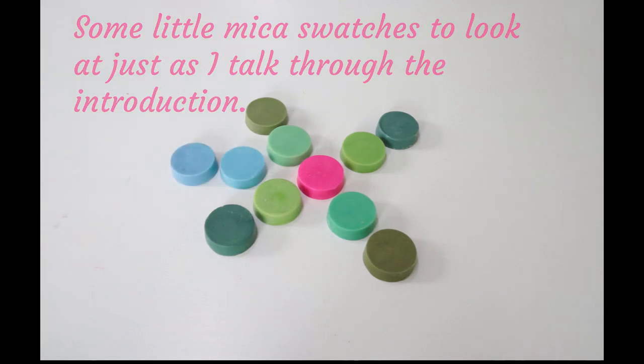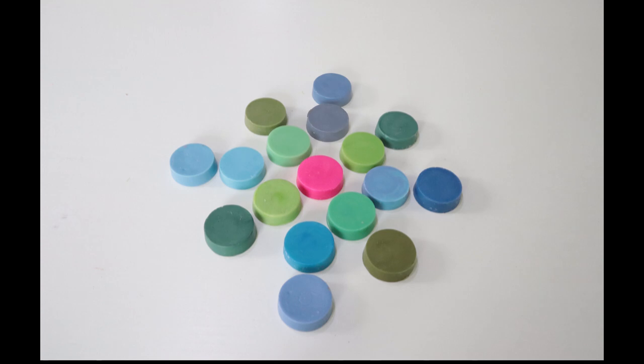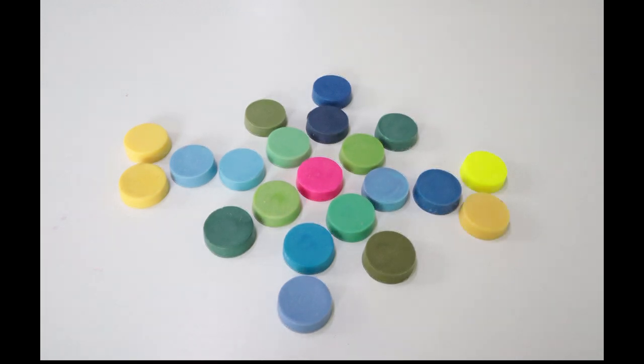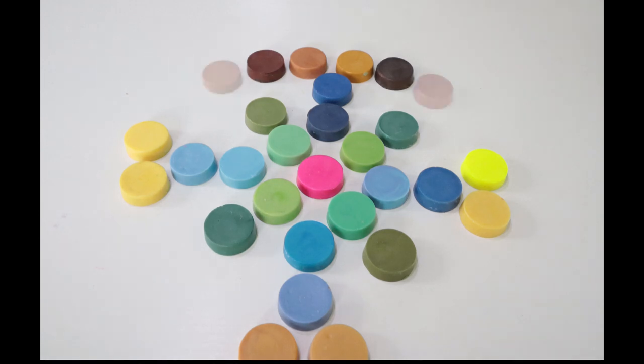Now to start off with, before you think about doing anything else, always make sure that you're buying your colors, whether they're micas or pigments or whatever, from reputable suppliers. Make sure that they are safe to use in cold processed soap and also make sure that they're stable to use in cold processed soap. The environment that soap goes through when it goes through its saponification is a really harsh environment, and not all colorants can survive.